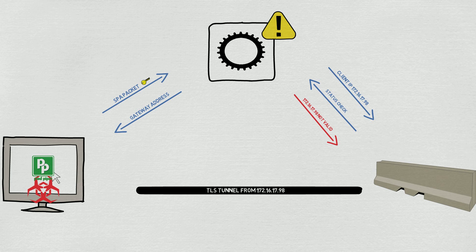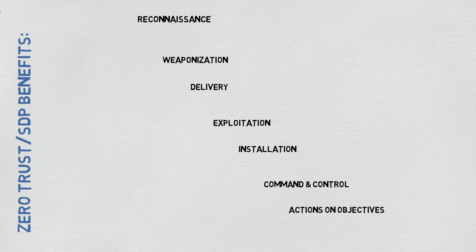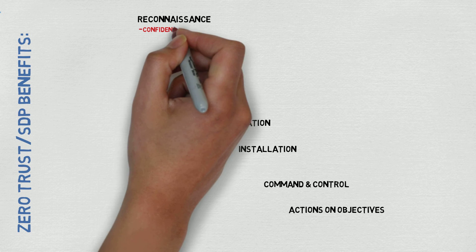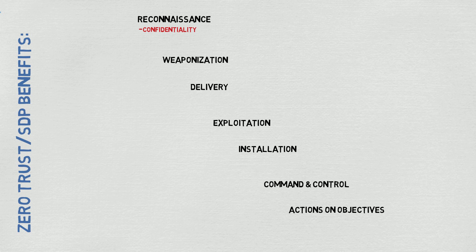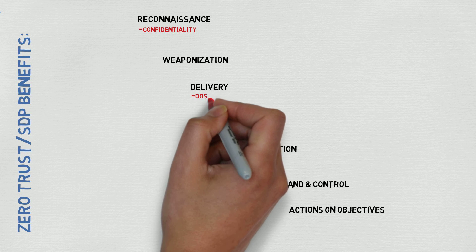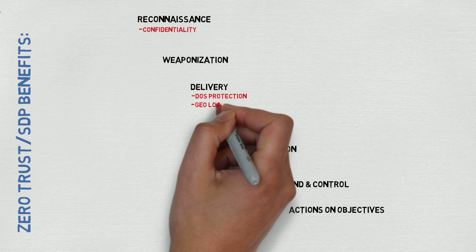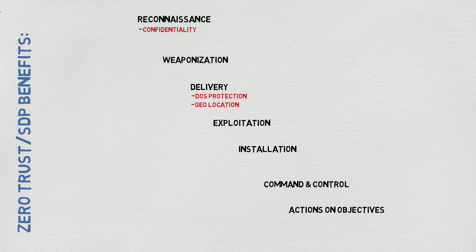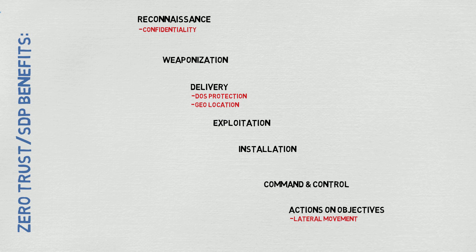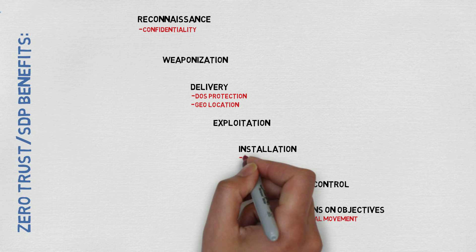The entire goal of SDP is to prevent network attacks against applications, but there are several other advantages to using SDP in your network, including confidentiality via encrypted tunnels, DOS protection using TLS anti-DOS tokens in the SDP protocol, location protection, lateral movement prevention, information obfuscation, incident response, segmentation, and quarantining.